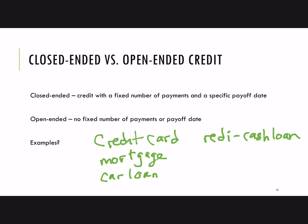First of all, credit card. Think about whether there is a fixed payoff date and a fixed number of payments. If you have a credit card, does the company say that by July of next year your credit card must be paid off with zero balance and paid off in 12 payments? Well, no, that's not quite the case. Credit cards are open-ended — there's no fixed number of payments and no set payoff date.